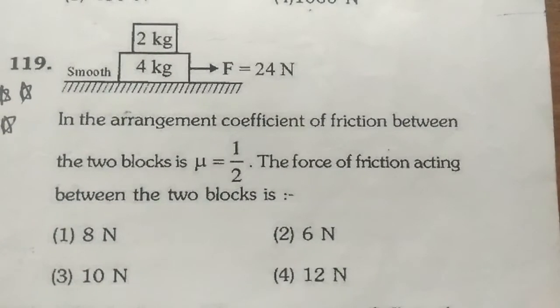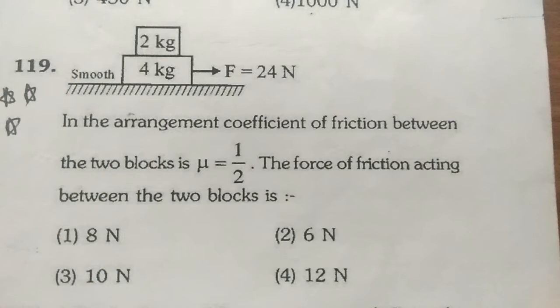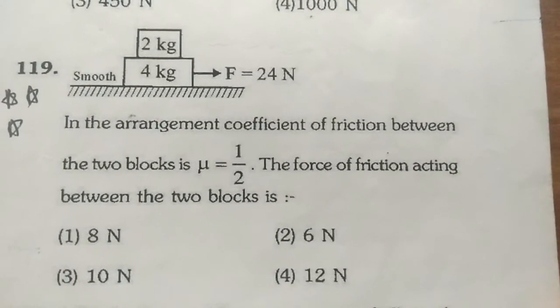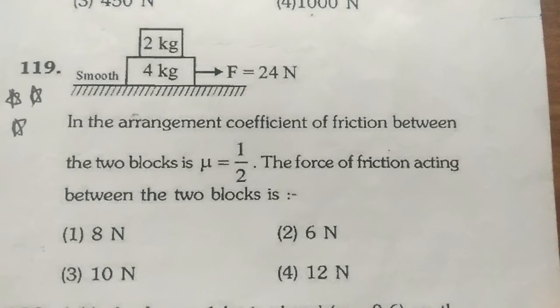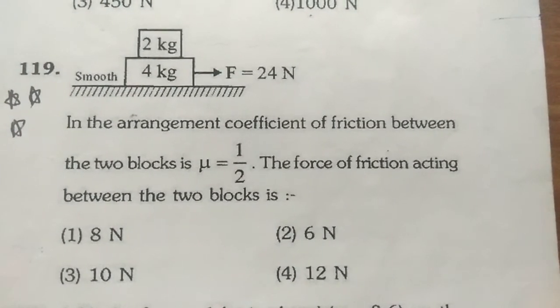So you have given the two block system, one over the other - 2 kg block over the 4 kg block. Both are placed on a smooth surface, and there is a coefficient of friction given between the blocks, 2 kg and 4 kg, that is of 0.5.